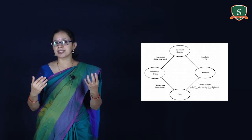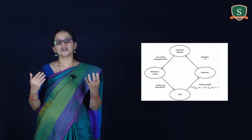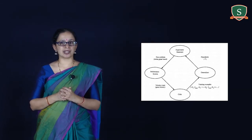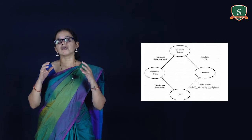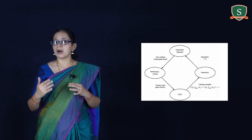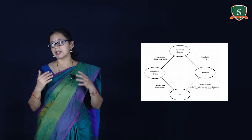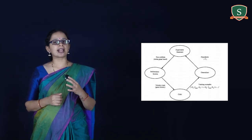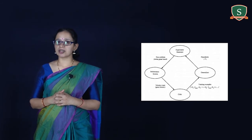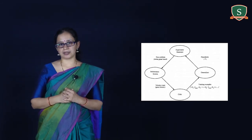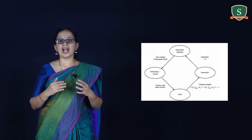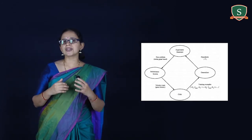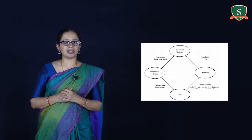The third module, the generalizer, takes training examples as input and produces an output hypothesis that estimates the target function. It generalizes from specific training examples, hypothesizing a general function that covers those examples and other cases beyond the training data. For example, y = mx + c is a target function where any values can be taken to draw a straight line.